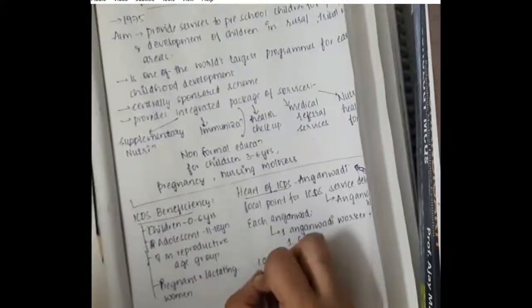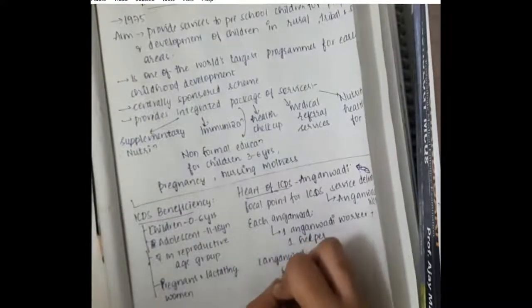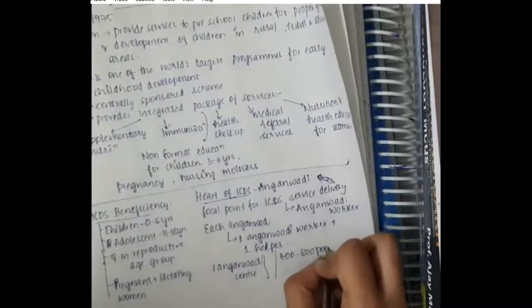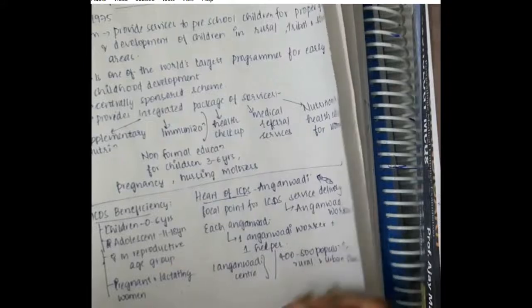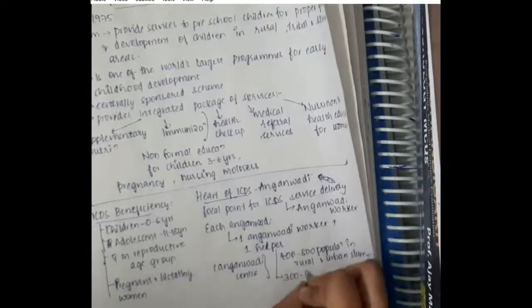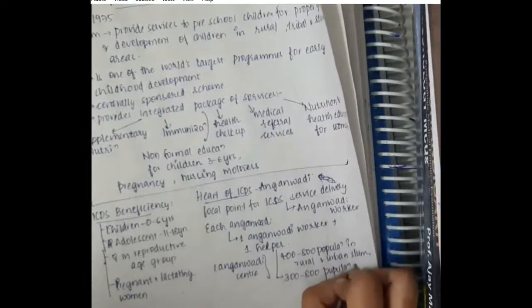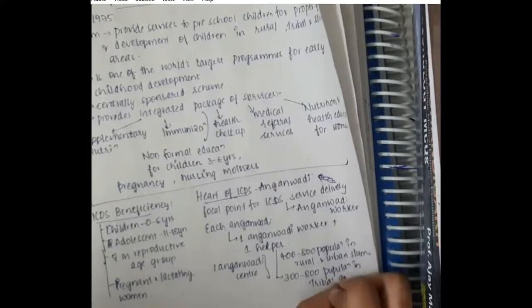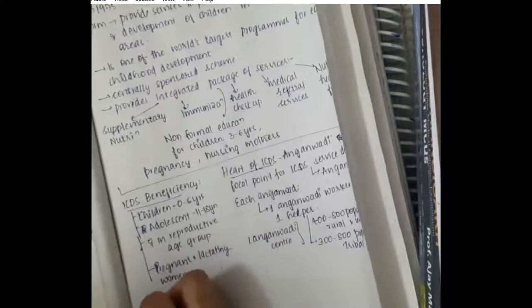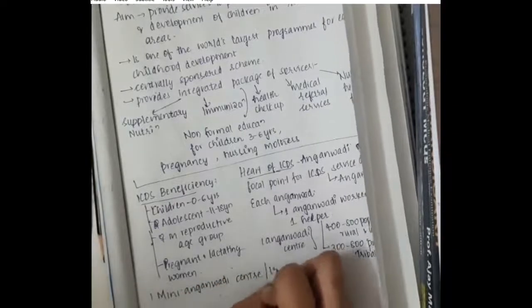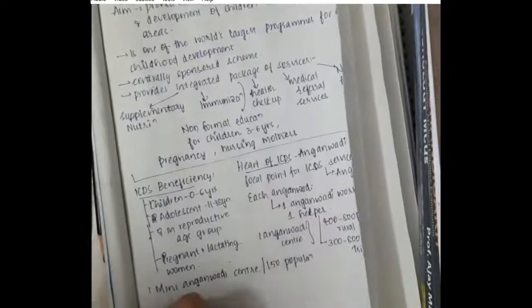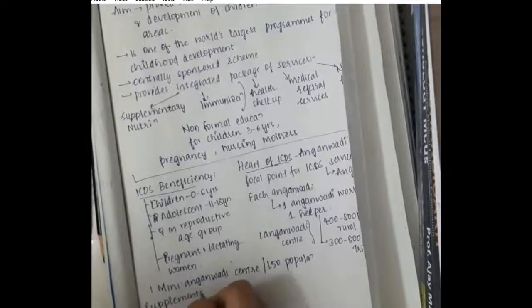One Anganwadi center is present for around 400 to 800 population in rural and urban slums. In tribal areas, there is one Anganwadi center for 300 to 800 population. There is one mini Anganwadi center per 150 population.